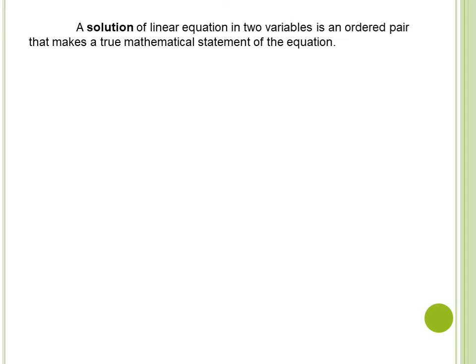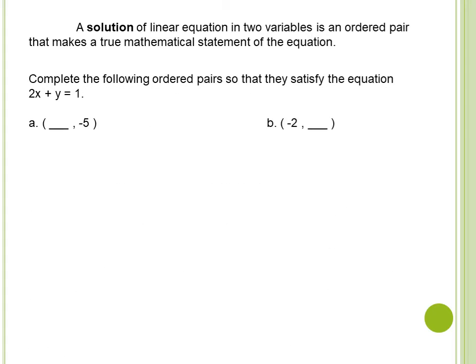In the linear equation, we also have a solution. What is a solution? A solution of a linear equation in two variables is an ordered pair that makes a true mathematical statement of the equation. Meaning to say, every linear equation has a solution. The solution will satisfy the equation. Let's have an example.